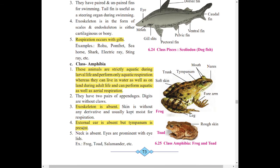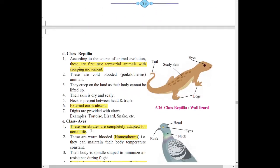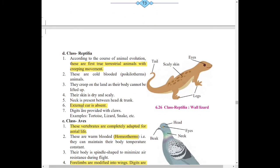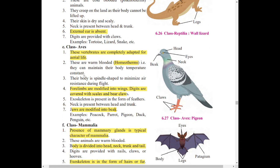Whatever is highlighted with marker is important. For class Reptilia, the most important point is: external ear is absent. And the first point as usual is important. Then class Aves: jaws are modified into beak, and forelimbs are modified into wings, and digits are covered with scales and bear claws.